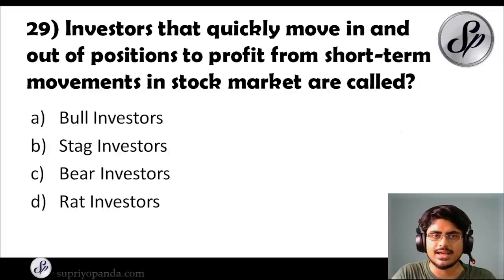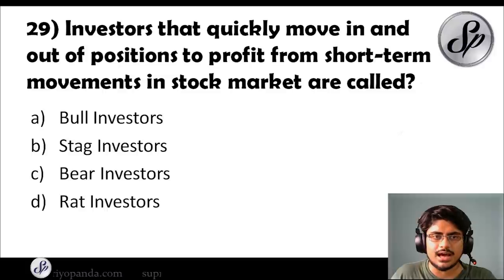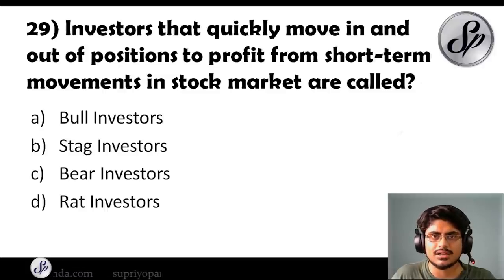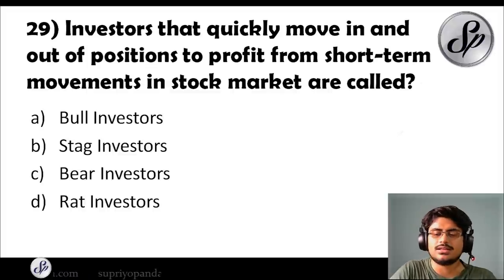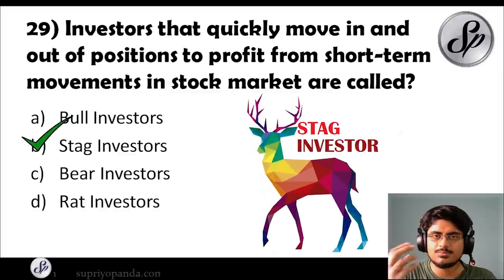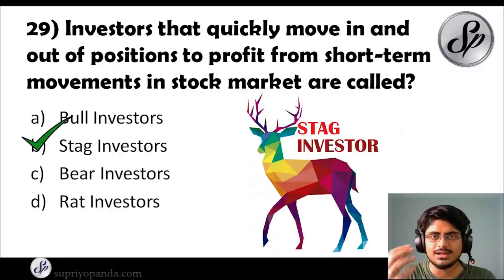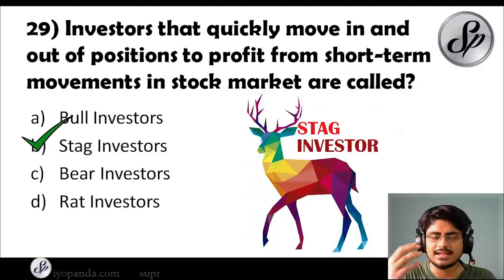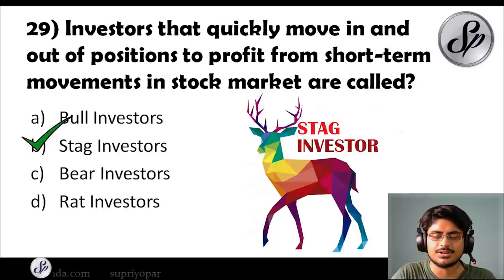Question twenty-nine: investors that quickly move in and out of positions to profit from short-term movements in the stock market are called what? The answer is stag investors. Remember what bull investors, bear investors, and stag investors are — all three categories are very important to understand.